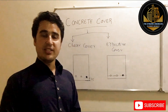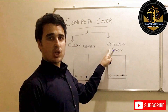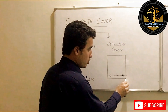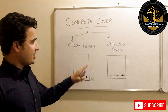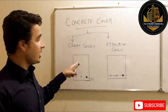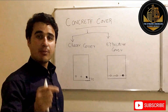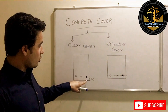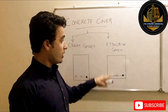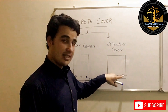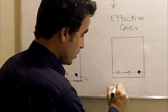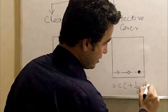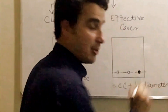So, the effective cover is the distance between the center of this bar and the outermost fibers. We can say that effective cover is greater than clear cover by an amount equal to half the diameter of the bar. Clear cover is the distance between the outermost fiber and the surface of the bar, while effective cover is the distance between the outermost fiber and the center of the bar. Therefore: Effective Cover = Clear Cover + (diameter of bar / 2).